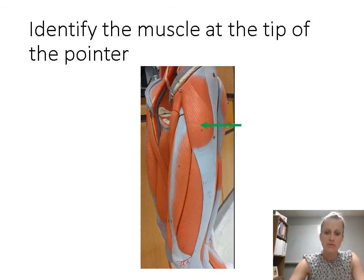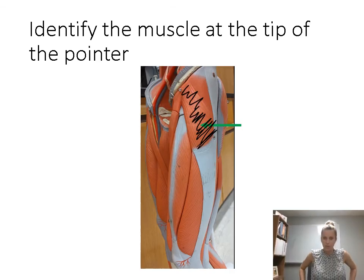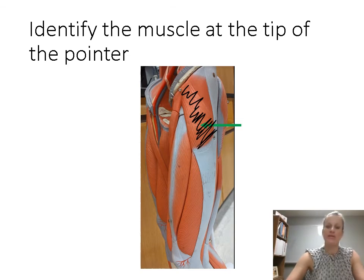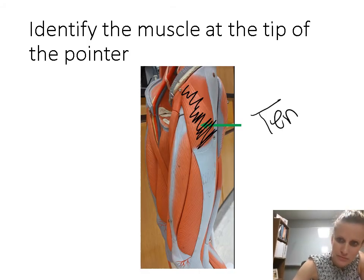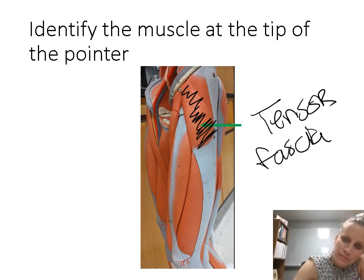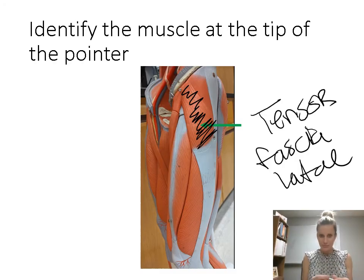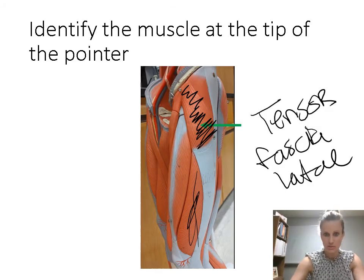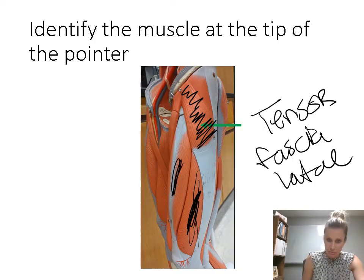This muscle is showing the superficial muscle in the outer thigh region — this is called the tensor fasciae latae. You can also see the muscles of the thigh: on the outside, the vastus lateralis, and in the middle, the biceps femoris.